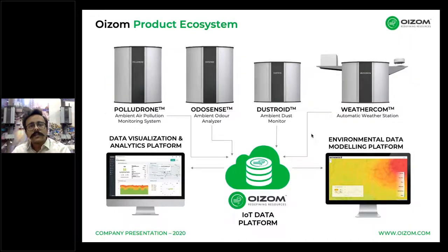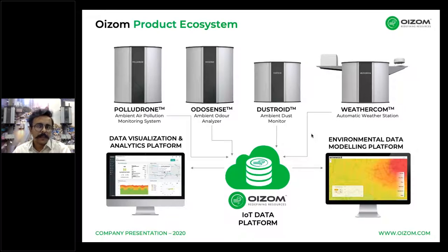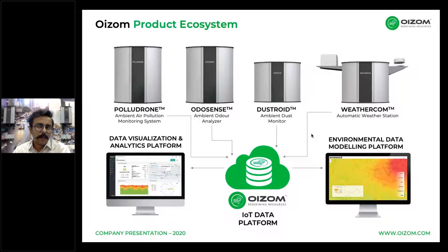Our flagship products are the ambient air pollution monitoring system — the Polludrone — the ambient odor analyzer OdorSense, the ambient dust monitor Dustroid, and the automatic weather station WeatherCom. All these flagship products are connected to the Oizom IoT data platform, where data is available in the form of visualization, analytics, and environmental modeling.